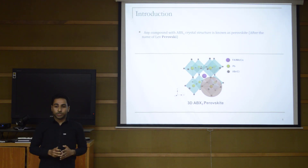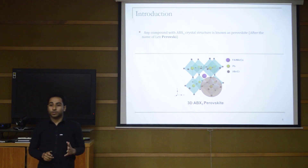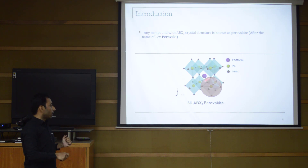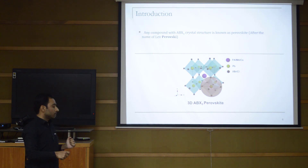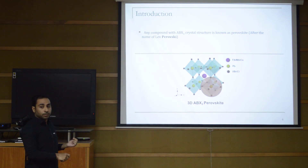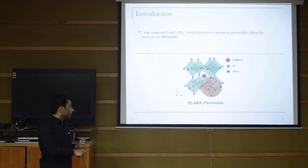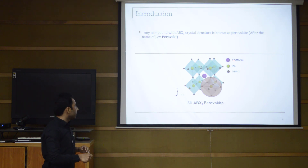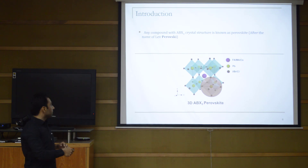The perovskite structure is a well-known structure, just like the classic calcium titanate structure. Any material with the formula ABX3 is known as a perovskite. It is composed of many octahedra — the metal halide octahedra — where the corner atoms are halides (iodine, bromine, or chlorine) and the central atom is a metal cation. When these octahedra combine with another cation at the center, it forms the perovskite structure. The A-site cation sits at the center of the overall unit cell, while B is the metal and X is the halide.